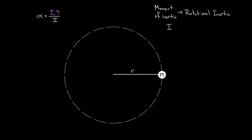We're dividing by the moment of inertia — the rotational inertia — because if this rotational inertia is big, it's in the denominator. If you've got a big denominator, you're going to have a small value, so alpha is going to be small — a small angular acceleration. But if the moment of inertia were small, it's going to be easier to rotate, and you'll get a relatively larger angular acceleration because you're dividing by a smaller number.